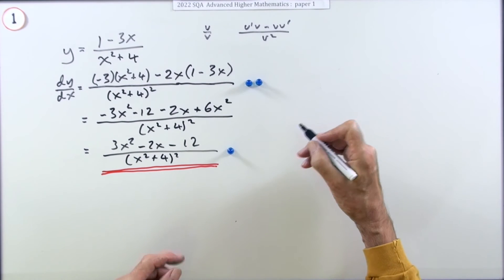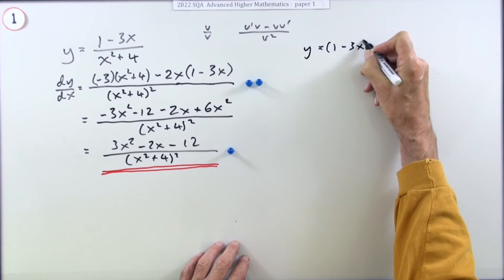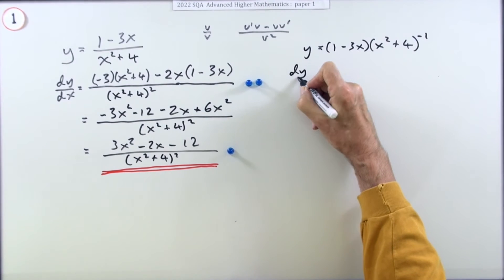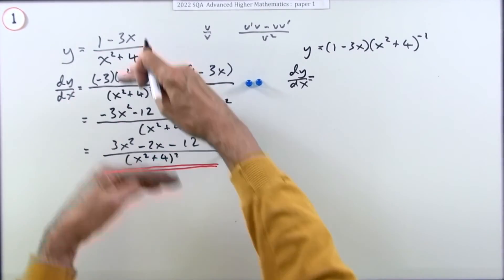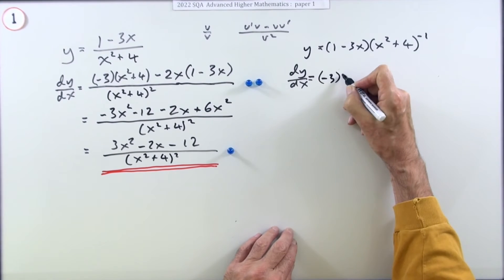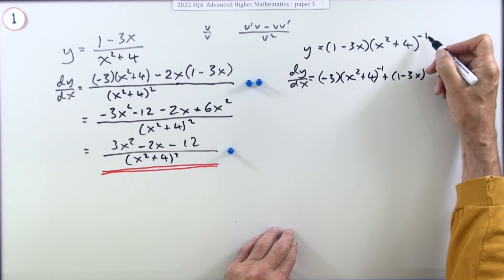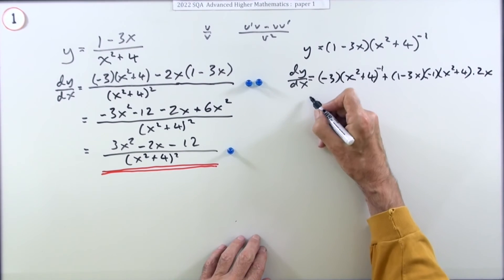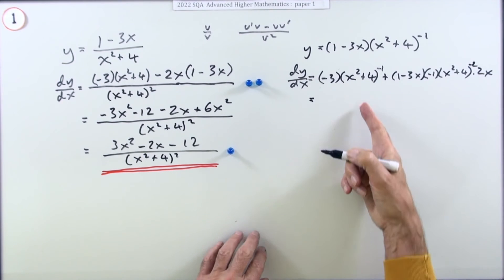Now what if you decided to use the product rule? You'd have to start off by changing that into a product: 1 minus 3x times x squared plus 4 to the power negative 1. Then differentiate. That's going to be longer. So that'll be the same as before, negative 3 times x squared plus 4 to the power negative 1, plus now I leave that one alone and differentiate the second part as a function of a function.